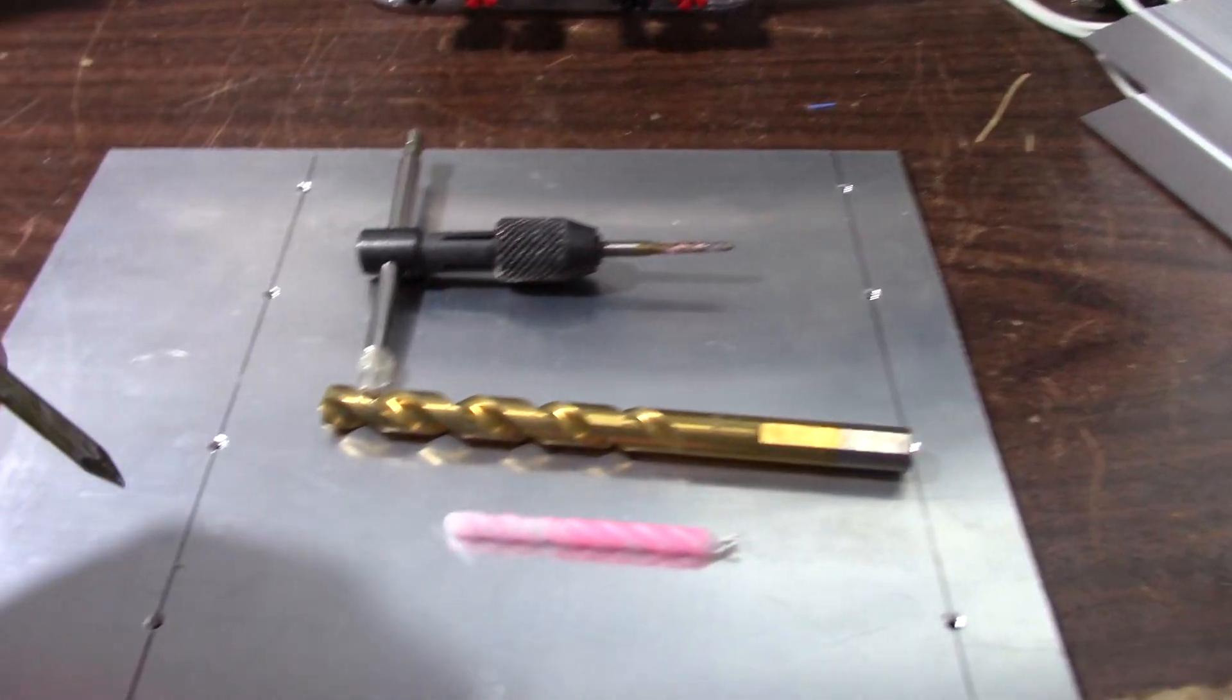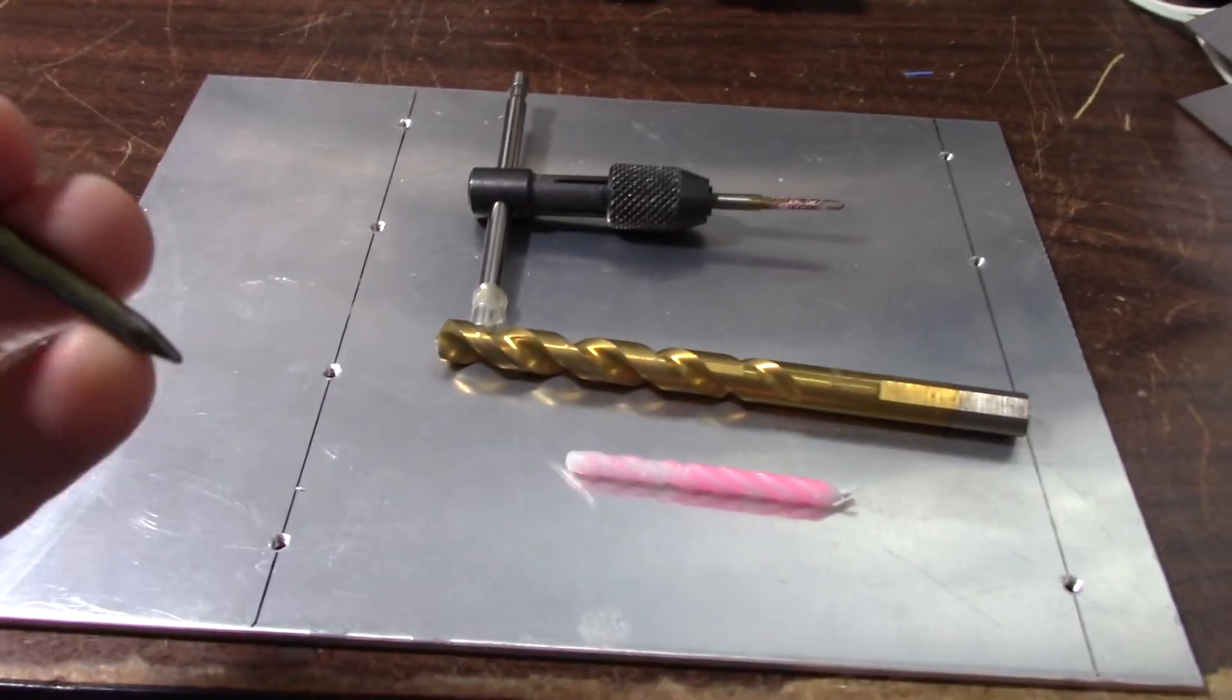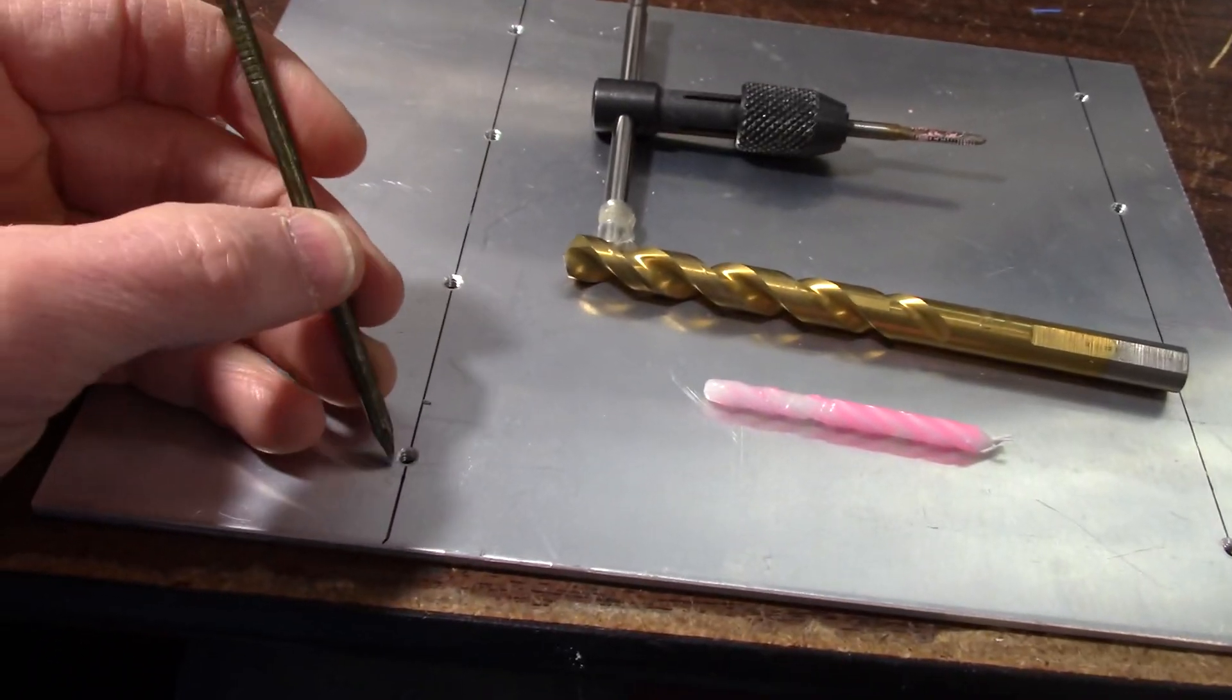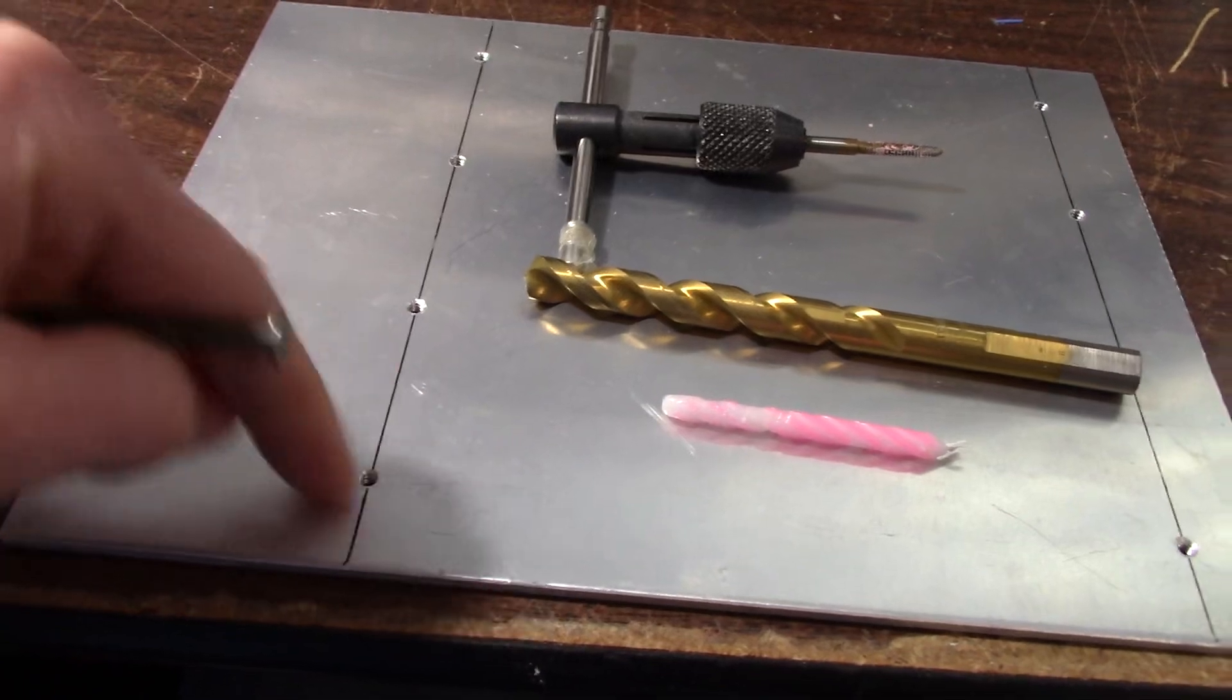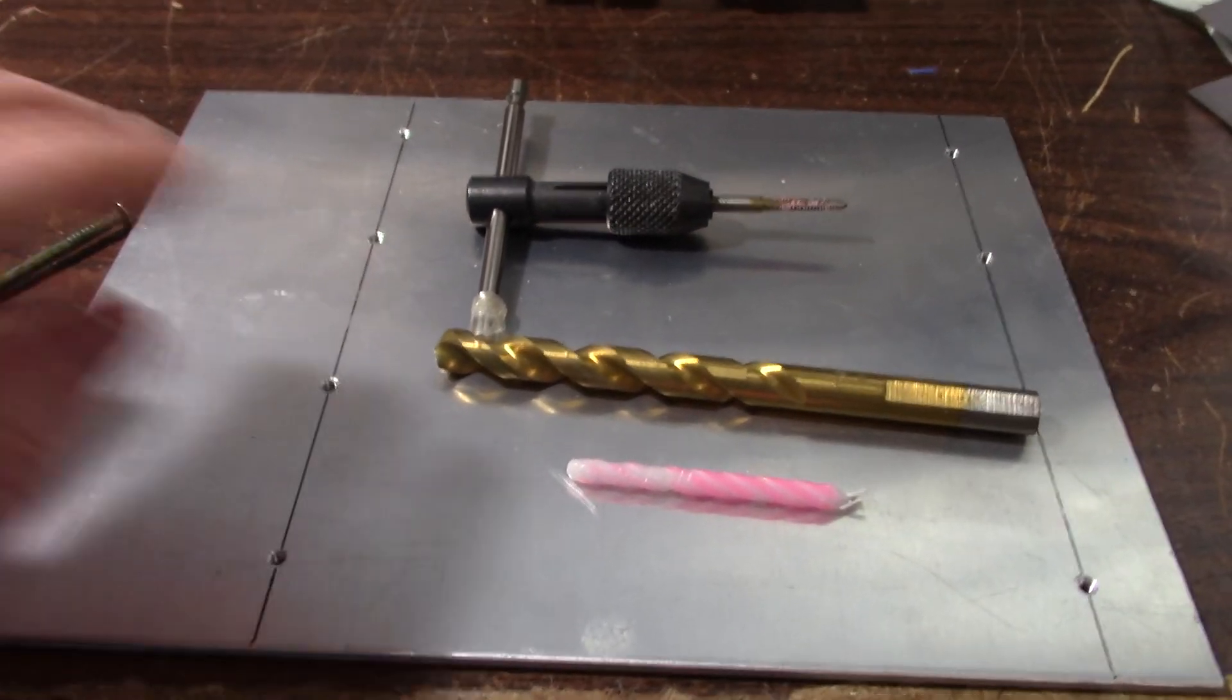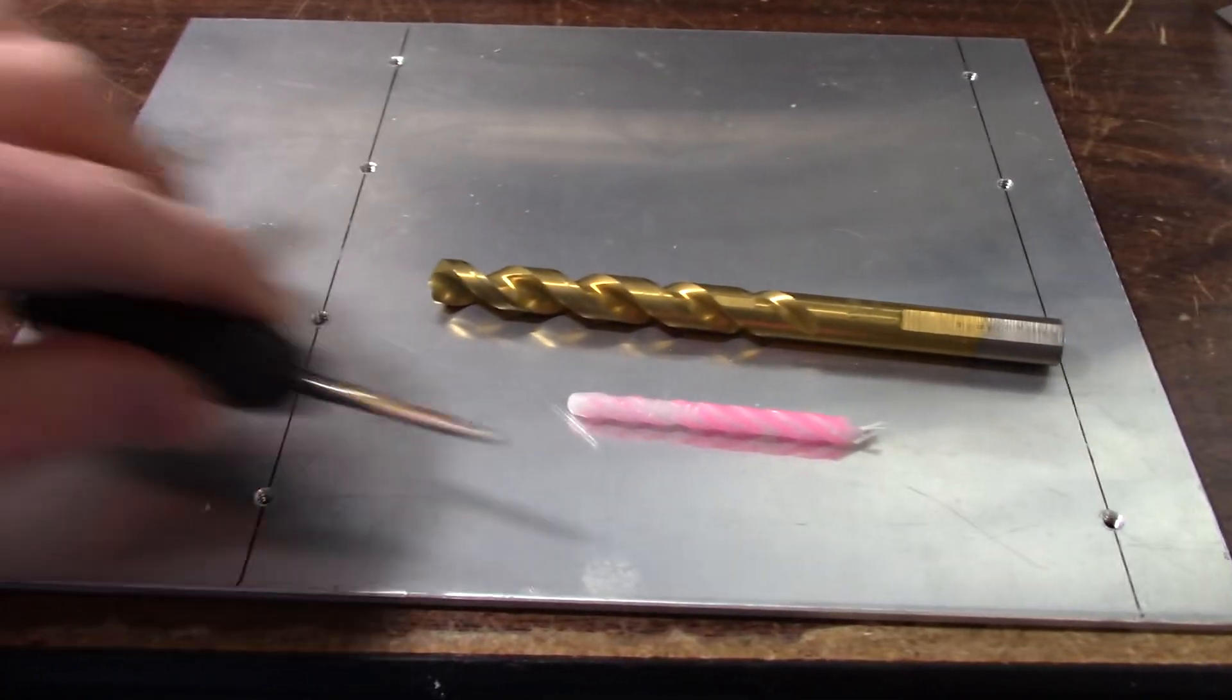And I use this as a nail set to mark the position. That way your drill bit doesn't walk all over when you're drilling. I drill the holes, the pilot holes for the tap. And I tap the holes.